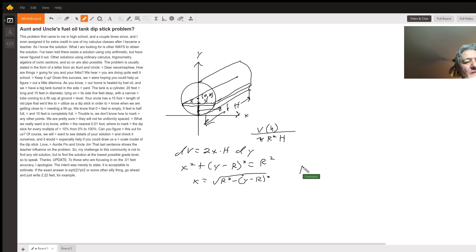Now we can figure out the total volume that's a function of h. We can say volume h equals the integral from 0 to h of 2 big H times the square root of R squared minus y minus R quantity squared dy.